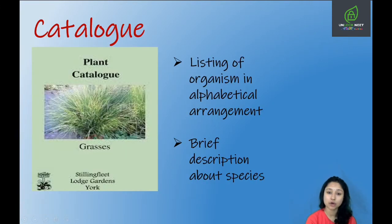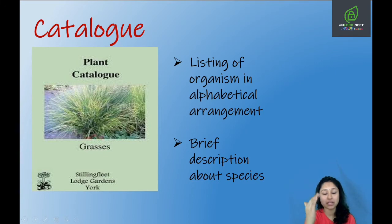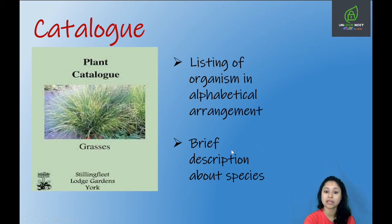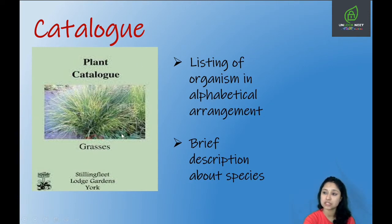Next is catalogue. In a catalogue, we have the list of organisms arranged in alphabetical manner. You can see the plant catalogue for grasses, where the arrangement of species is done in alphabetical manner.